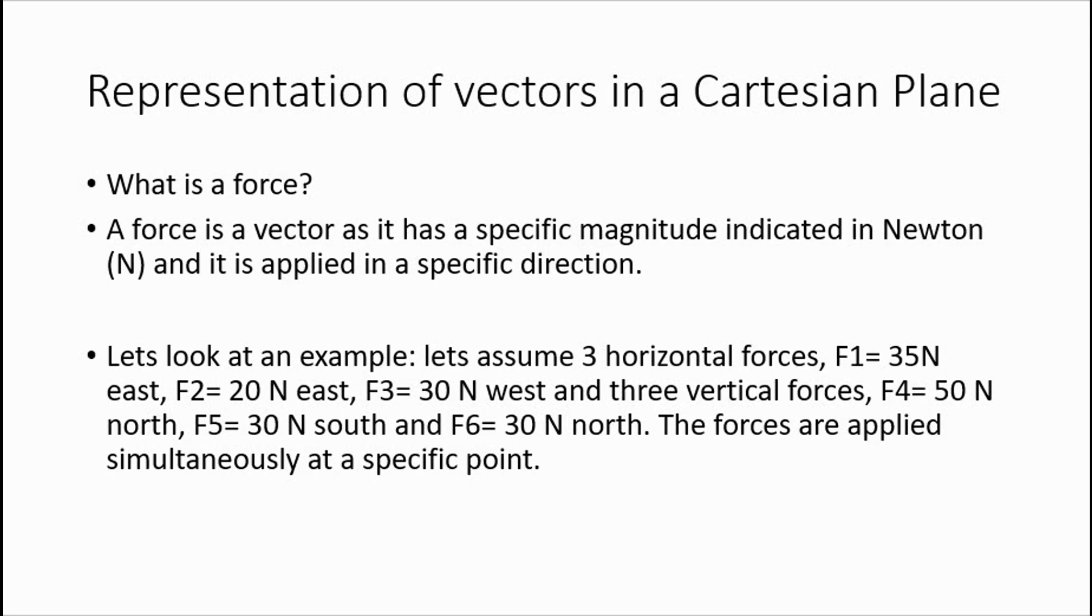Let's assume three horizontal forces: F1 35 newtons east, F2 20 newtons east, and F3 30 newtons west, and three vertical forces: F4 is 50 newtons north, F5 is 30 newtons south, and F6 is 30 newtons north. The forces are applied simultaneously on a specific point. Now that is a lot of information, so let's break it down a little bit slowly. Do not get confused.